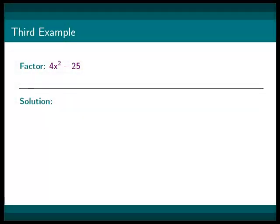In our third example, we will factor the expression 4x squared minus 25. We will begin by first realizing that the difference of two squares can be used here and come up with 2x squared minus 5 squared.